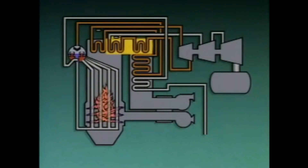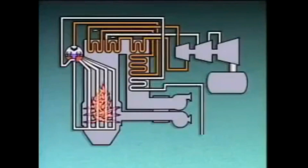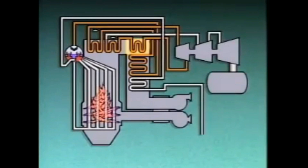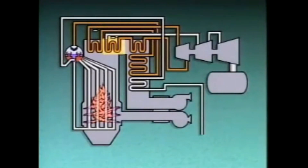Reheaters are very similar to superheaters. They use heat from the boiler furnace or from hot combustion gases to raise the temperature of the steam. For example, this boiler has a primary reheater that the steam enters first as it comes from the high-pressure section of the turbine. After the steam flows through the primary reheater, it moves on to a secondary reheater.